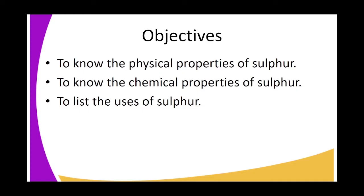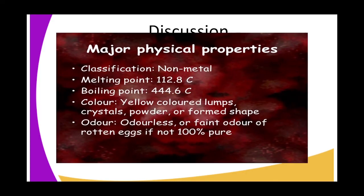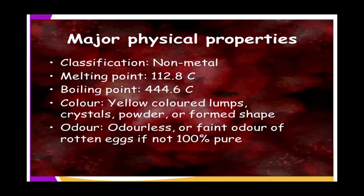Sulfur is a yellow non-metallic element. A molecule of sulfur consists of rings of eight atoms of sulfur joined together — that's why sulfur is written as S₈.